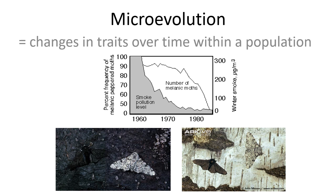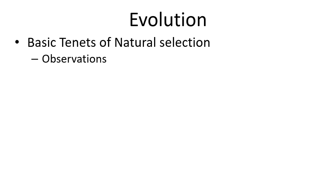After the Industrial Revolution, when measures to reduce pollution were put in place, the trees turned white again and the population shifted back — the white moth became more abundant than the darker moth. To understand evolution, we have to understand these basic tenets and observations.